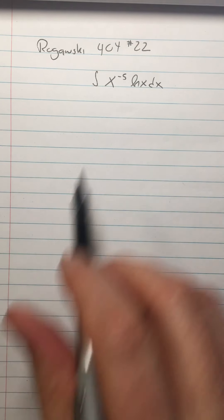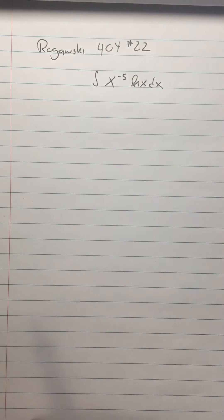All right, so now we're going to do a couple more of these examples. This is Rogowski 404, number 22. It's the integral of x to the negative fifth ln x dx.